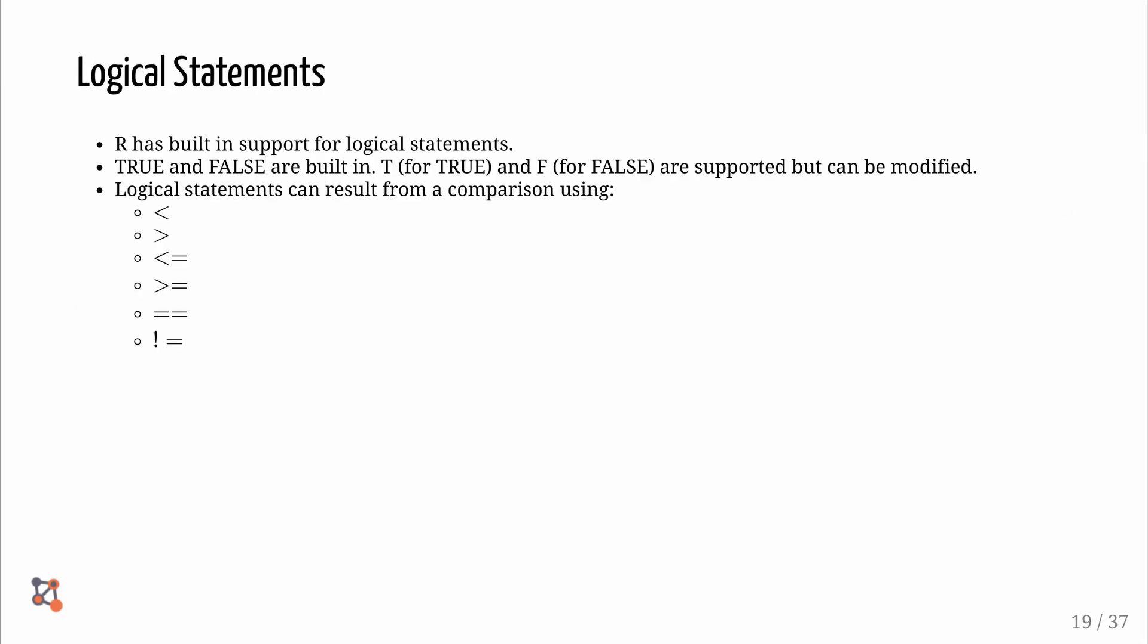Logical statements. R has built-in support for logical statements. True and false are built in. T for true and F for false. These are supported but cannot be modified. Logical statements can result from a comparison using greater than and less than, greater than and equal to, less than and equal to, double equals, and exclamation point and equal sign. The last two mean equals and not equals.